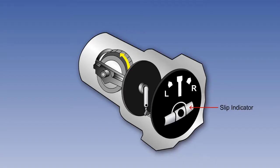The slip indicator is often incorporated in the instrument face of the turn indicator, or the turn coordinator. Bear in mind, however, that the slip indicator is a separate instrument, which functions independently from the turn indicator, or the turn coordinator.